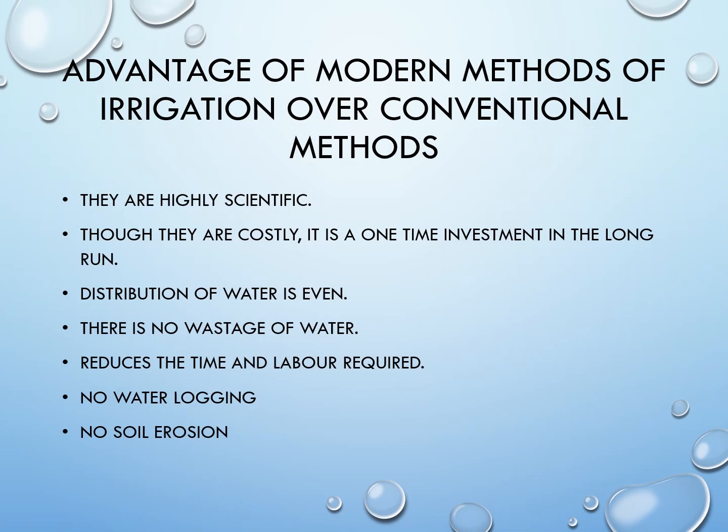In this lesson we have learned both conventional methods and modern methods of irrigation. We have also learned about the advantages and disadvantages of all the methods. But in the present days, modern methods are gaining more popularity over conventional methods. What can be the reasons? Let's have a look.